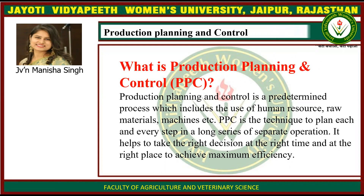Production Planning and Control is a predetermined process which includes the use of human resources, raw materials, machines, etc. It is a technique to plan each and every step in a long series of separate operations. It helps to take the right decision at the right time and at the right place to achieve maximum efficiency.